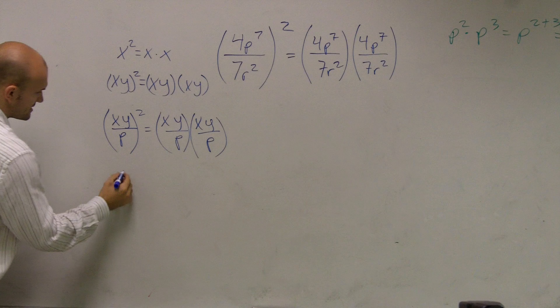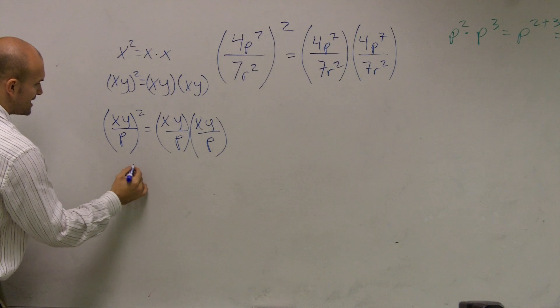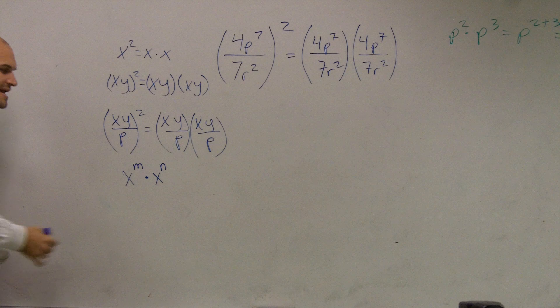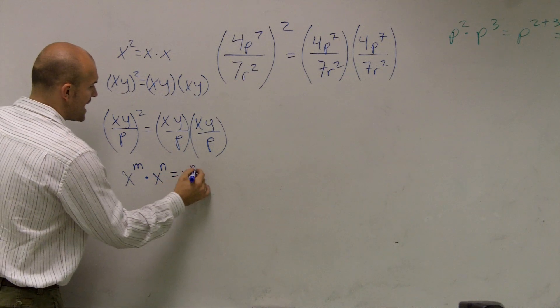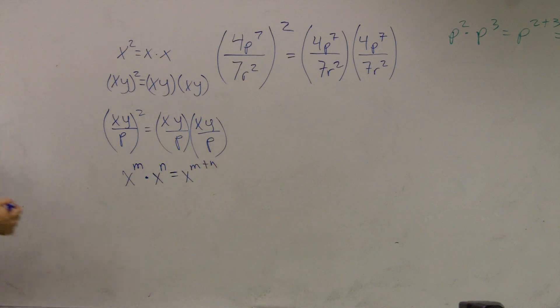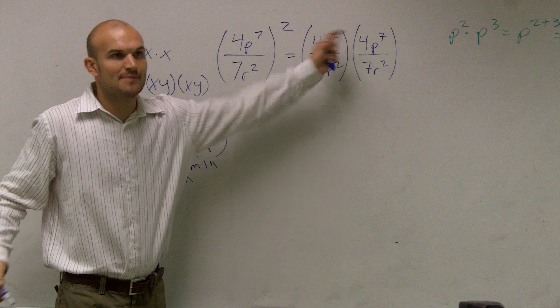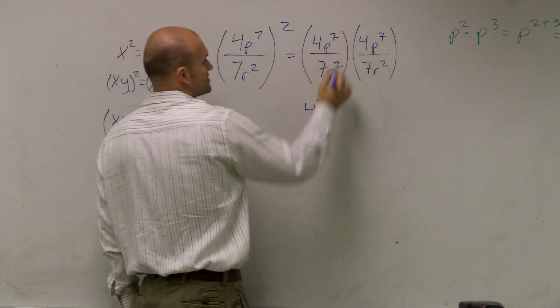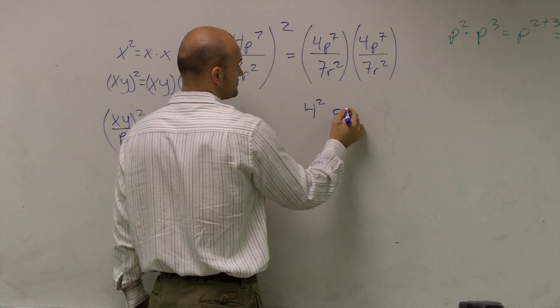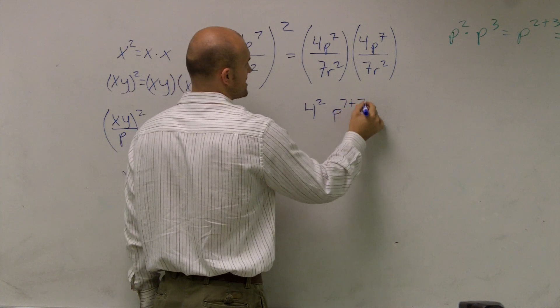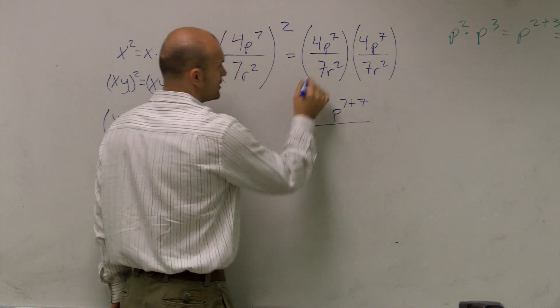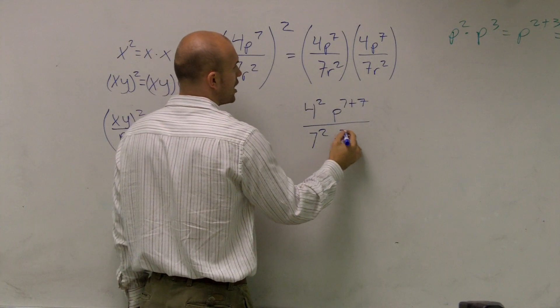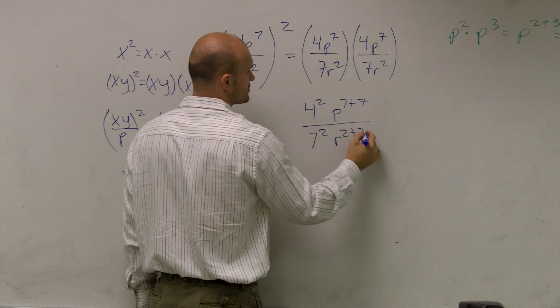The rule of exponents states, when I have a multiplication of two numbers with the same base and exponents, I simply add the exponents. So here I have 4 times 4, which is 4 squared, p7 times p7, which really is p to the 7 plus 7, all over 7 times 7, which is 7 squared, and r squared plus 2.